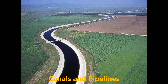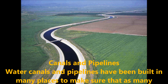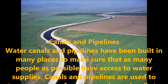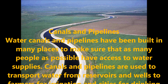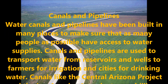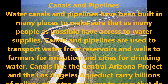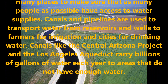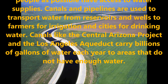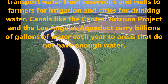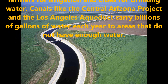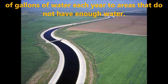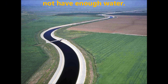Another type of water storage and transport involves canals and pipes. Canals and pipes have been built in many places to make sure that as many people as possible have access to water supplies. They are used to transport water from reservoirs and wells to farmers for irrigation and to cities for drinking water. Canals like the Central Arizona Project and the Los Angeles Project carry billions of gallons of water each year to areas that do not have enough water.